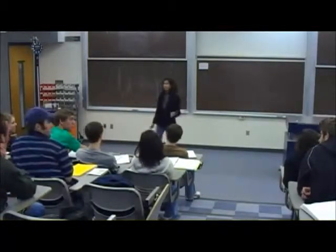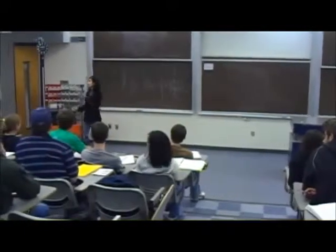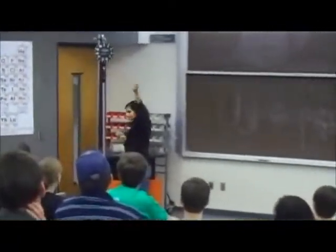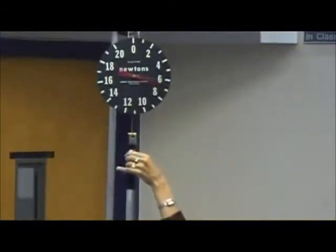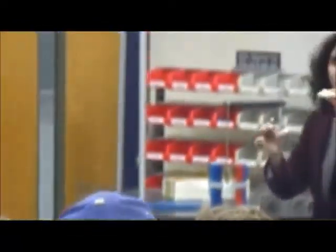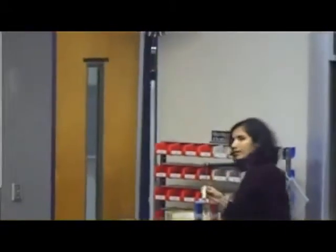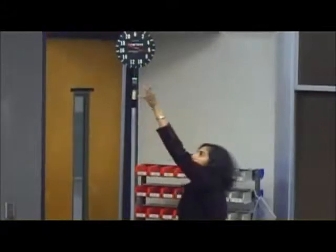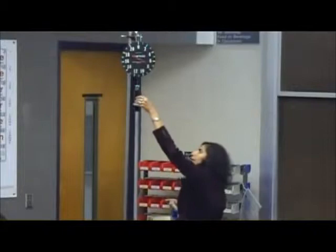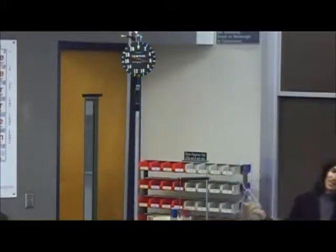The magnet takes much longer to fall through the tube. The non-magnet falls through almost instantly. Using this experiment you can tell whether an object is a magnet or not. As the magnet passes through, the changing magnetic field induces currents in different parts of the tube, and those currents repel the magnet - slowing it down. The non-magnet has no magnetic field, so no currents are induced and it falls freely.